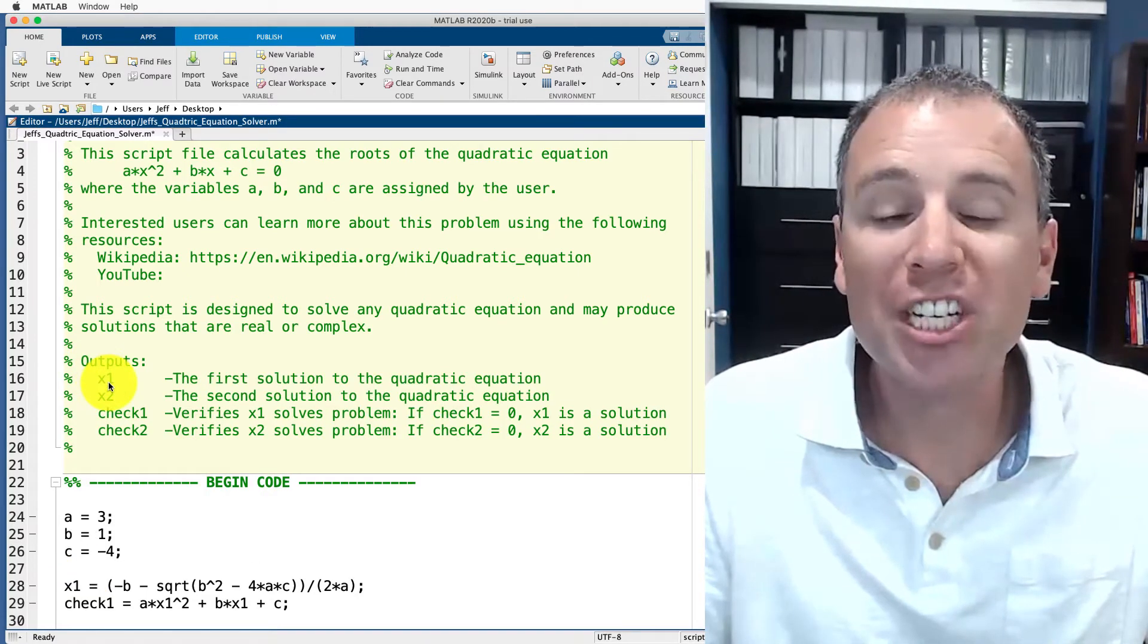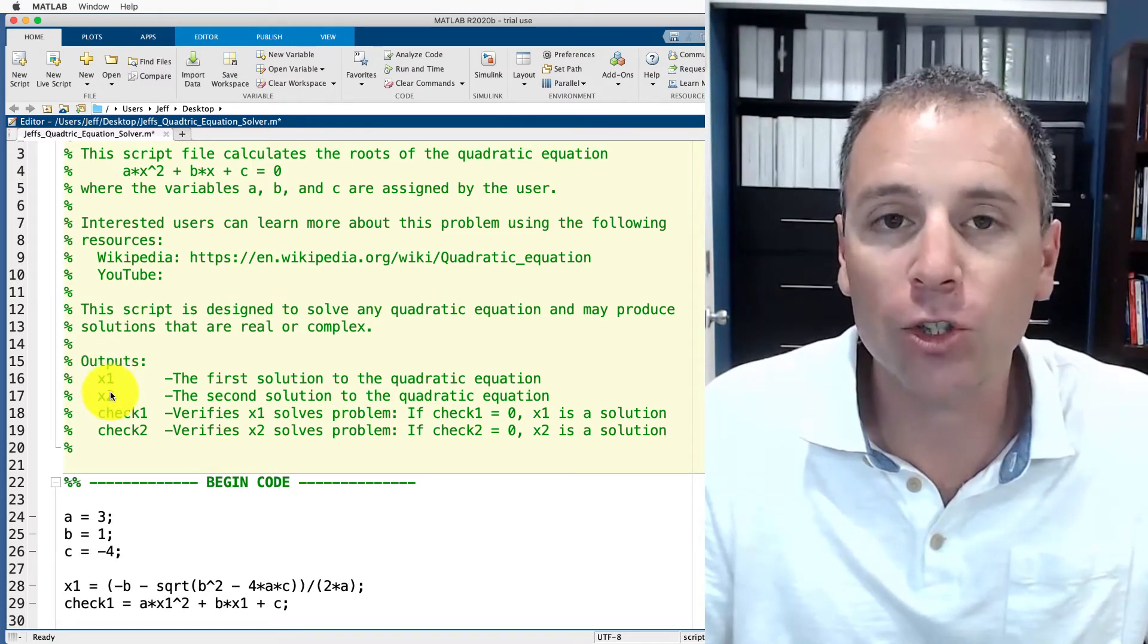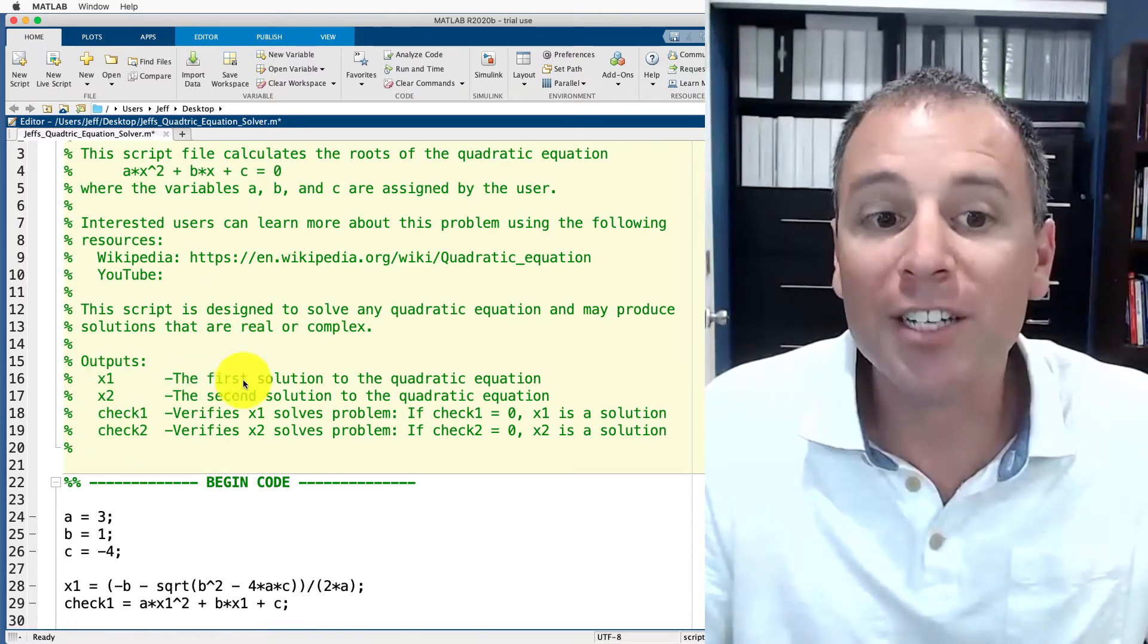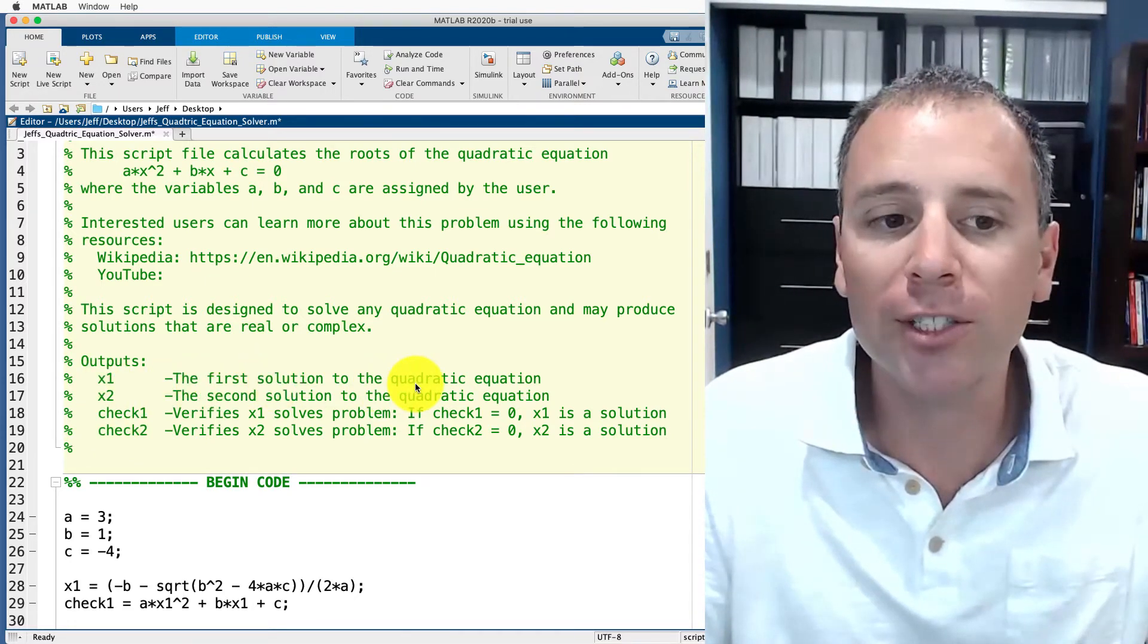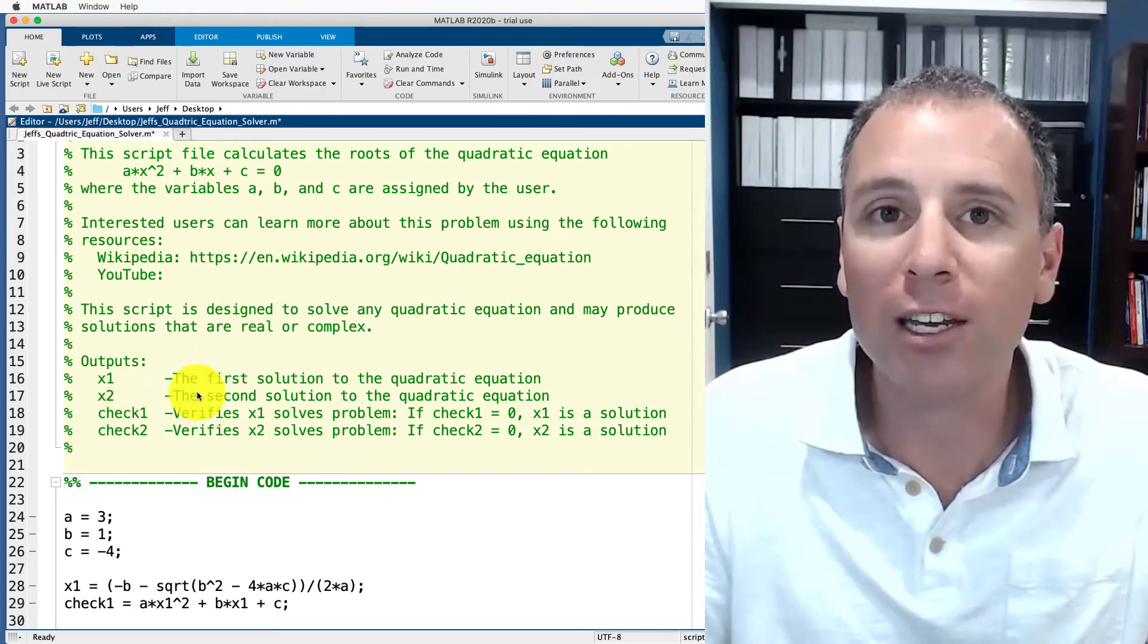This x2 variable is the second solution and the check two verifies that. Right under this outputs we actually document that idea. What outputs do we have? We have x1, x2, check one and check two. What do they do? Well x1 is the first solution to our quadratic equation. x2 is the second solution to our quadratic equation. We've documented that here.